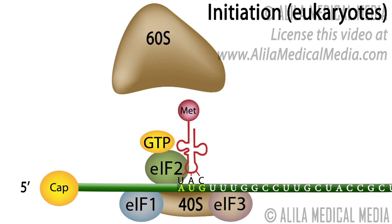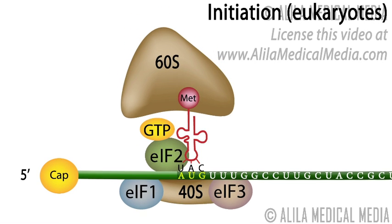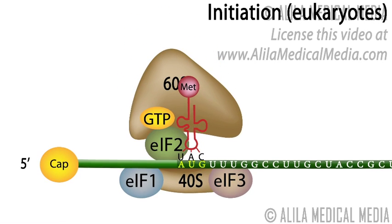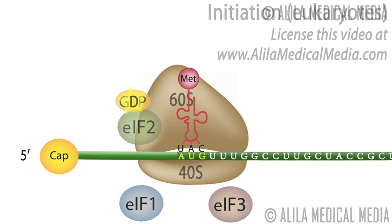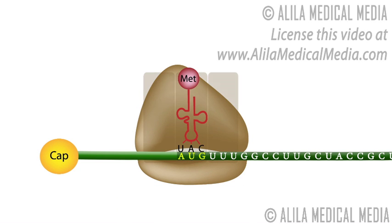At the start codon, the large ribosomal subunit joins the complex and all initiation factors are released. The ribosome has three sites.